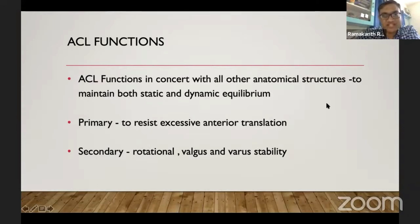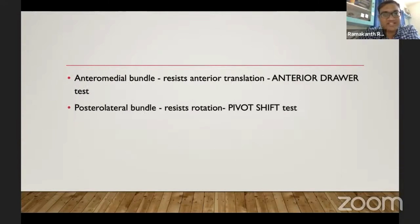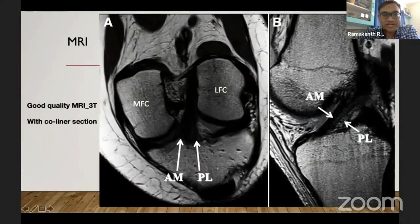The ACL functions in concert with other anatomical structures to maintain static and dynamic equilibrium. Its primary function is to resist excessive anterior translation, and secondarily it provides rotational stability and some varus-valgus stability. The anteromedial bundle provides resistance to anterior translation in the drawer test, while the posterolateral bundle resists rotation — tested by the pivot shift.